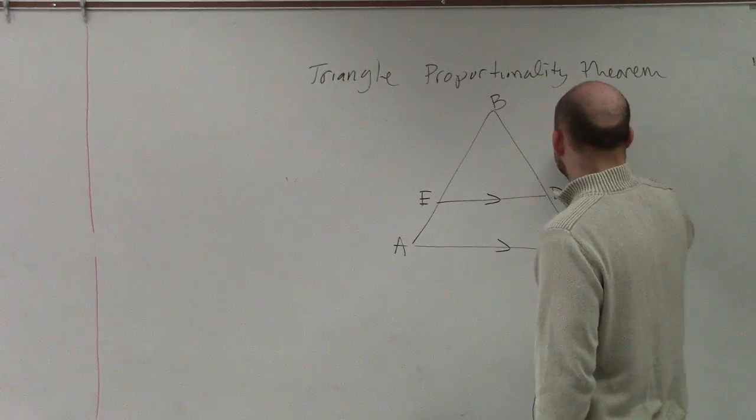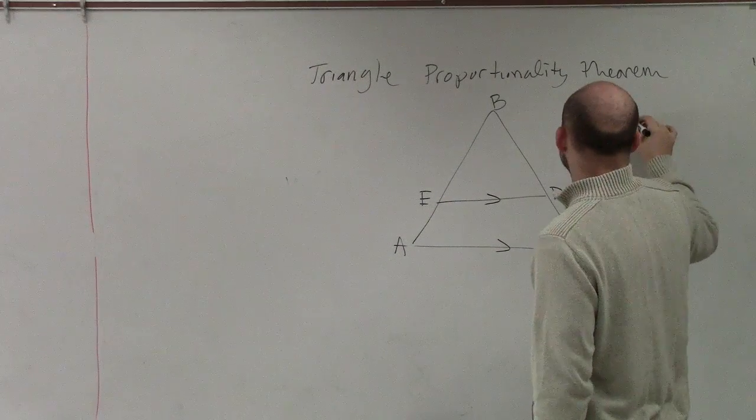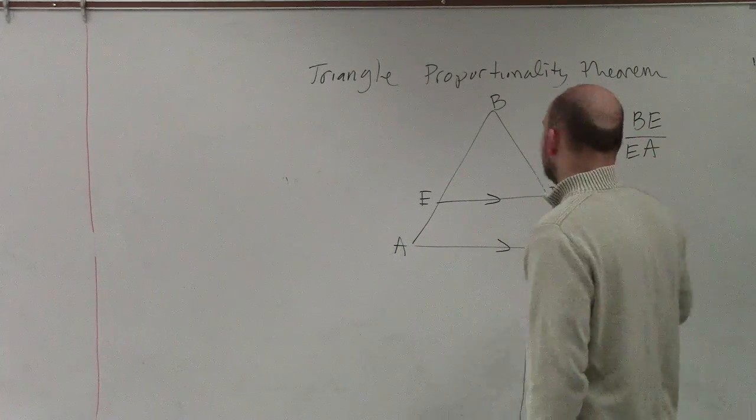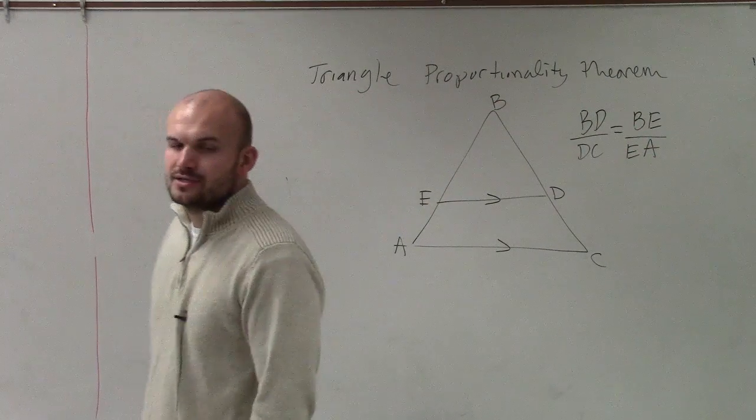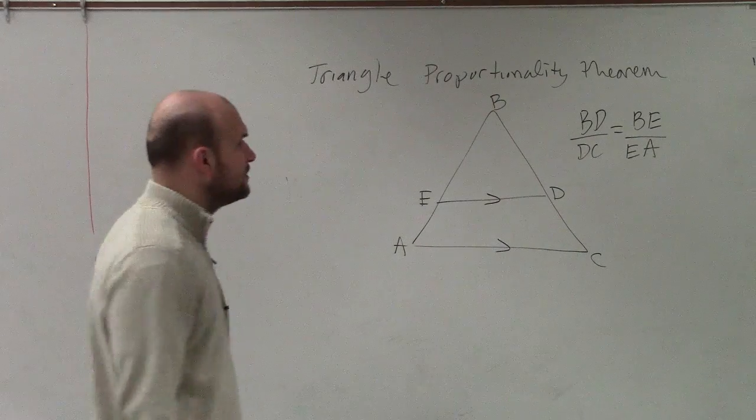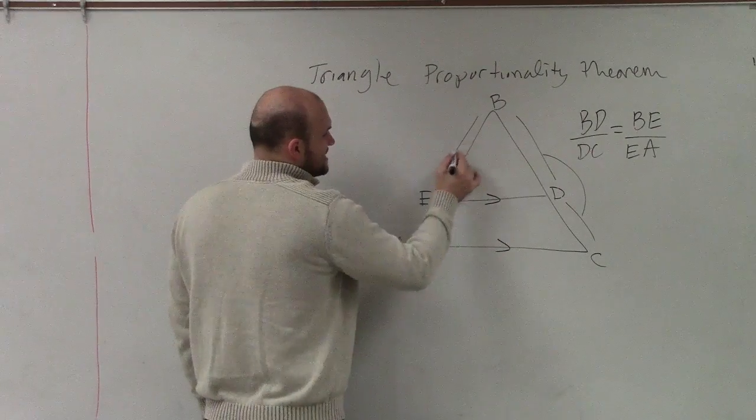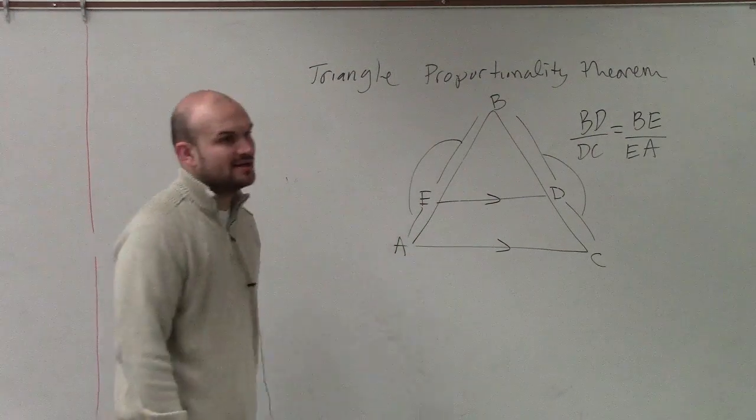And the proportions that we're going to have is BD is to DC, which is equal to BE is to EA. All right? So those proportions are equivalent. So this length is proportionate to that length, as that length is proportionate to that length.